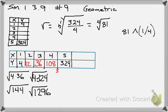So what is 81 to the one-fourth power? 81 to the one-fourth power, the fourth root is 3, because 3 times 3 times 3 times 3 is 81. So the fourth root of 81 is 3.